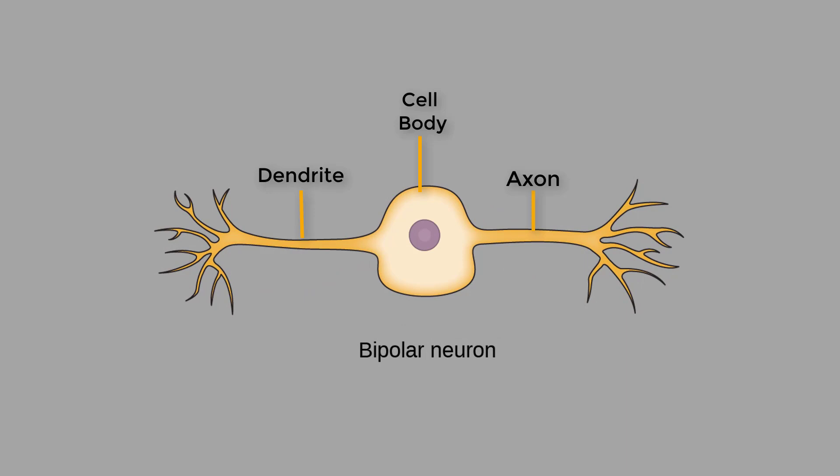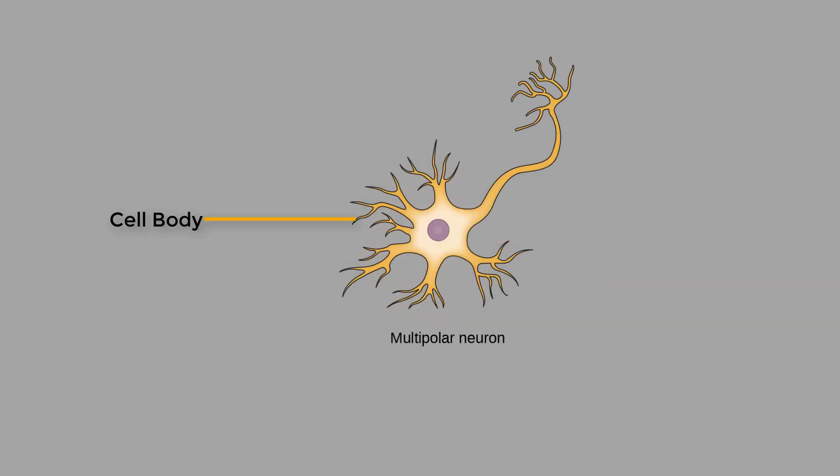The third type is called a multipolar neuron. This consists of one axon and multiple dendrites. It is the most common kind of neuron. It is usually found in the central nervous system.